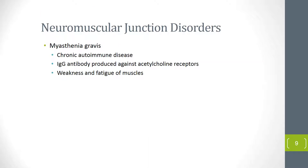Myasthenia gravis is a chronic autoimmune disease in which the neuromuscular junction is affected, so there is no proper communication between the motor neuron and the muscle cell. It is fairly common in young people — someone in their twenties or thirties can be affected — but it may affect anyone of any age. It is more common in women than men.